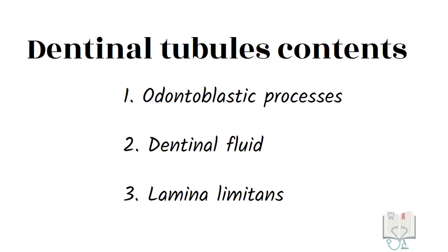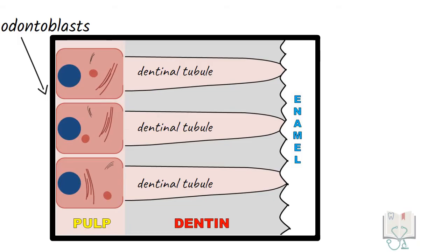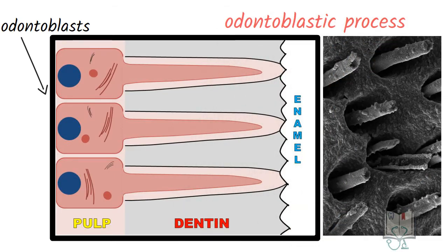Now let us see what are the contents of these dentinal tubules. Odontoblastic process. Odontoblasts are located in the pulp just beneath the dentine. Their cytoplasmic extensions extend from the odontoblasts into the dental tubules called as odontoblastic processes.